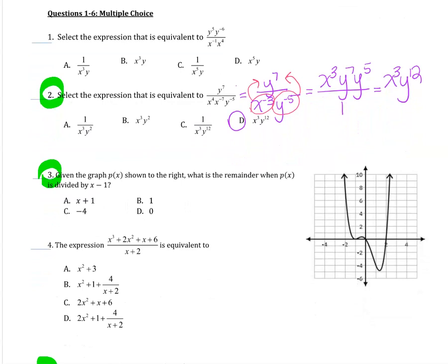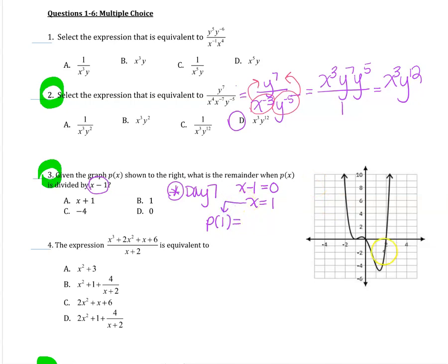For question 3, it's actually very simple, but a lot of students forget how to do this. This is from day 7 in our notes — the factor and remainder theorem. Given the graph of p(x), what is the remainder when p(x) is divided by x minus 1? Factor and remainder theorem says we can plug in the root of what we're dividing by into the original function, and it will always spit out the remainder. So x minus 1 set equal to 0 gives x equals 1. Go to the graph at x equals 1, and the y-value comes out at negative 4 — that represents your remainder.